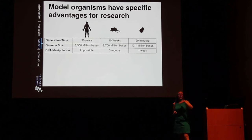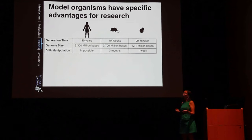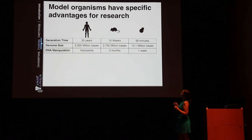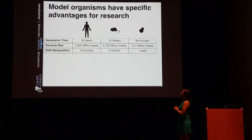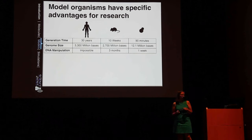Yeast takes it even further. The generation time for a yeast cell is only 90 minutes — they replicate really, really fast. Their genome is 300 times smaller than ours, which makes it faster to read and easier to work with. And to make one of those specific targeted changes takes only about a week in a yeast cell — even faster than mice.